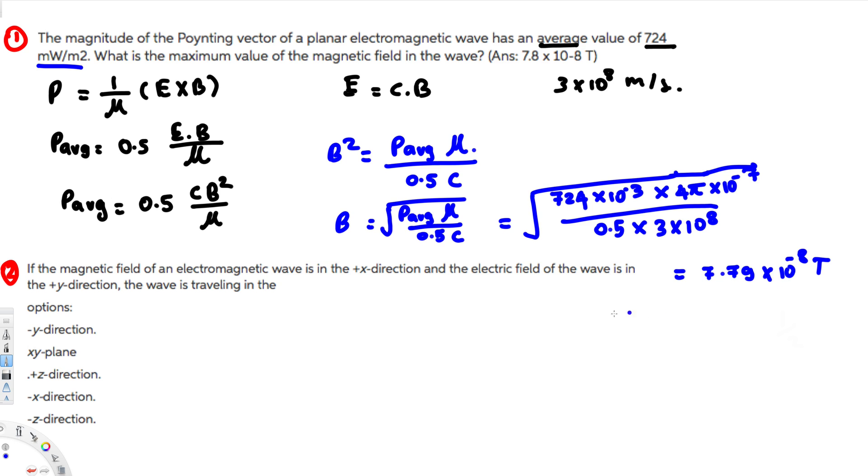Now let's look at this problem. If the magnetic field of an electromagnetic wave is in the plus x direction and the electric field waves in the plus y direction, the wave is traveling in which direction? So here we are going to do this formula.